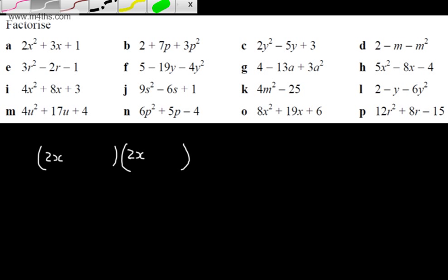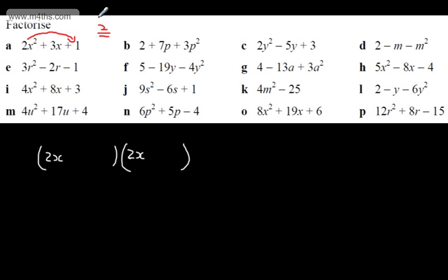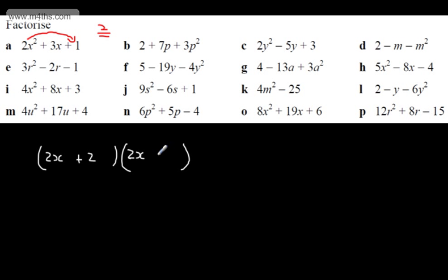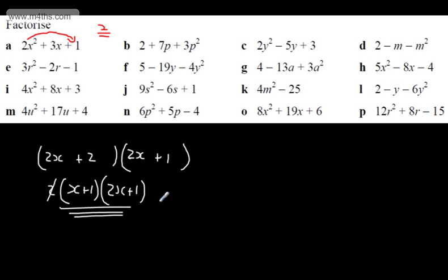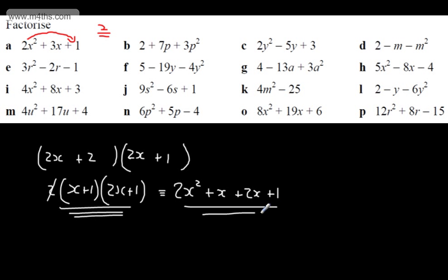What we do is multiply the a term by the c term. So 2 times 1 gives me 2. I now look for two numbers that multiply to give 2 and add to give 3 — that's simply plus 2 and plus 1. So in each bracket, I put plus 2 and plus 1. At this stage, we look for common factors in both brackets. I can take 2 out of the first bracket, giving me x plus 1. The second bracket is 2x plus 1 with no common factor. Cancel off, and the factored expression is (x+1)(2x+1). Multiplying back: x·2x = 2x-squared, x·1 = x, 1·2x = 2x, 1·1 = 1, giving 2x-squared plus 3x plus 1.